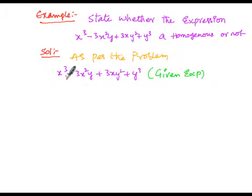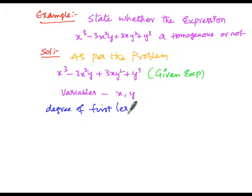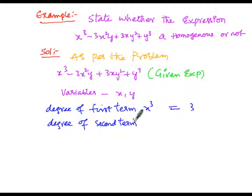In the given expression, the variables are x and y. The degree of the first term, x³, is 3. The degree of the second term, 3x²y, has x with exponent 2 and y with exponent 1, so the degree is 2+1 = 3.